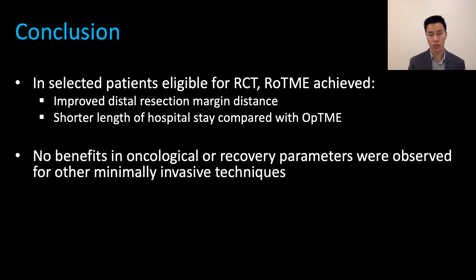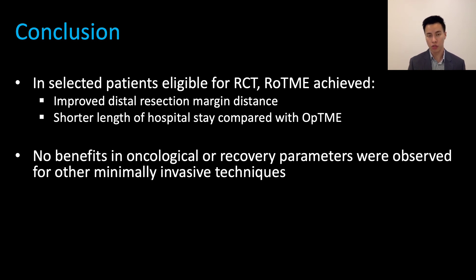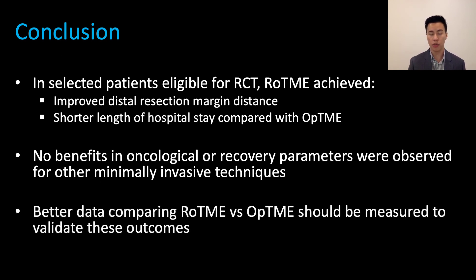Recently, robotic surgery has been a promising alternative for mesorectal excision despite its poor adoption rates amongst colorectal surgeons and its expensive costs. Our study has shown that robotic surgery has some superiority over other surgical techniques. Given the lack of robust RCTs comparing robotic surgery versus the gold standard open surgery, better data in the form of large multi-centred RCTs comparing robotic versus open surgery should be undertaken to best validate these outcomes.